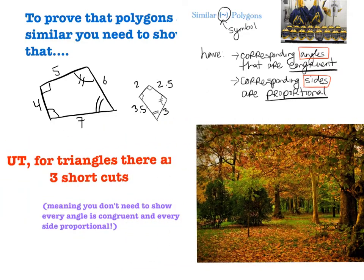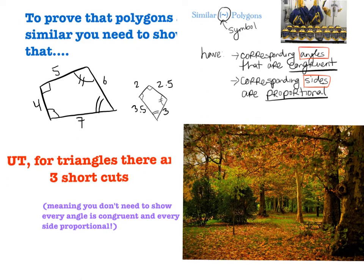Now luckily for you, remember we're looking at triangles today. For triangles, there are three shortcuts. Now the three shortcuts that I'm about to show you are three theorems. And the three theorems mean that you don't need to show every single angle is congruent, and you don't need to show that every side is proportional. You just need a few combinations. So what I'd like you to remember, what I'd like you to really take away from this slide, is that for triangles, there are some shortcuts for showing that they are similar. But if it's not a triangle, you need to show all of the angles are congruent and all of the sides are proportional. For triangles, there are three shortcuts.